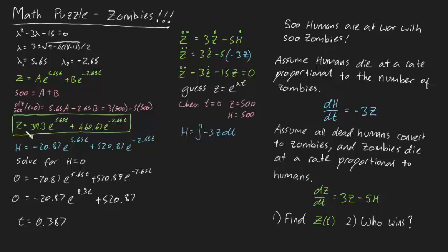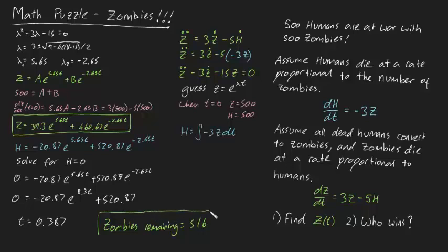Plugging that back in, the number of zombies remaining when the humans lose is 516. So humans lose, zombies win, and there are 516 zombies at the end of the war.